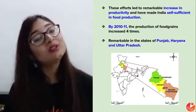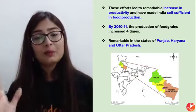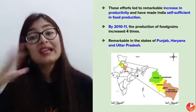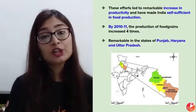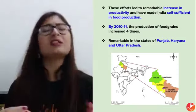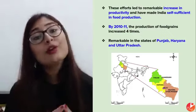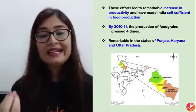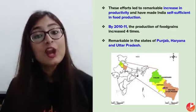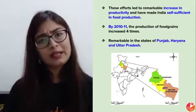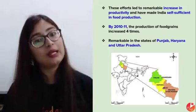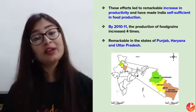Because production was happening with advanced technology, more people were needed to operate it, which also led to more employment. Between 2010 and 2011, production became 4 times what it was before — 10 kg had become 40 kg. Rural farmers and farmers of states like Punjab, Haryana, and Uttar Pradesh became more prosperous. High-yielding seeds, fertilizers, and pesticides helped them increase production remarkably — they were uplifted significantly.